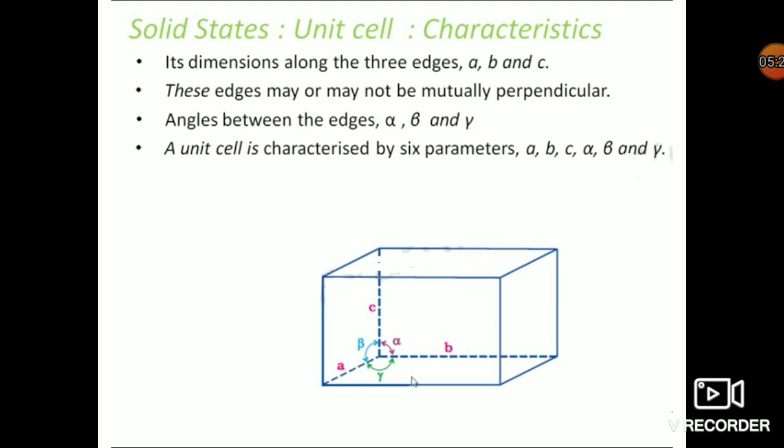These edges may or may not be mutually perpendicular. If it is a perfect cube, only then the edges will be 90 degrees to each other; otherwise the angle might be anything. The angles between the edges are alpha, beta, and gamma. Alpha is the angle between edges b and c; beta is the angle between edges a and c; and gamma is between a and b. So there are six parameters that characterize the unit cell: three edges a, b, c and three angles alpha, beta, and gamma.